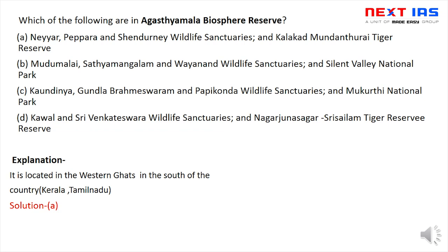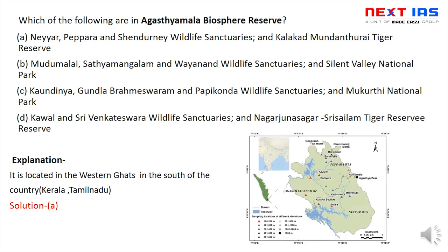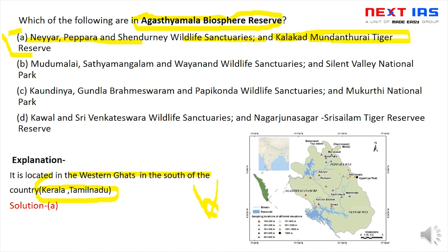Next question: which of the following are part of Agasthyamalai Biosphere Reserve? Options include Neyyar, Peppara, Shendurney wildlife sanctuaries, and Kalakad-Mundanthurai Tiger Reserve। Agasthyamalai Biosphere Reserve Western Ghats में है, और Kerala और Tamil Nadu states को cover करता है। So correct option is A. यह थोड़ा map-based factual question है — लेकिन अगर Biosphere Reserves देखे हों, तो solve हो सकता है। Comment box में बताइए: Simlipal Biosphere Reserve कहाँ है?